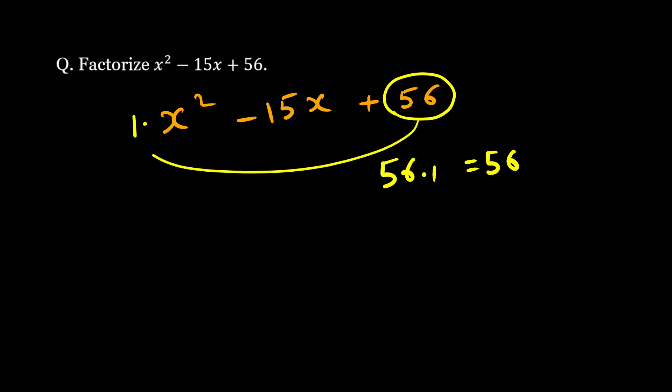And then what I will do is try to get two factors out of this whose sum is minus 15. So can I get 8 and 7? Since I have minus 15, I will take minus signs with both. Then only if I add them will I get minus 15.